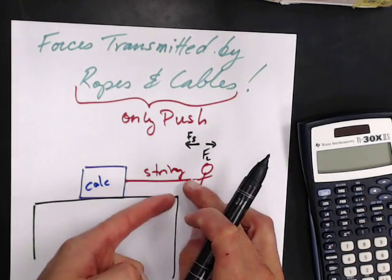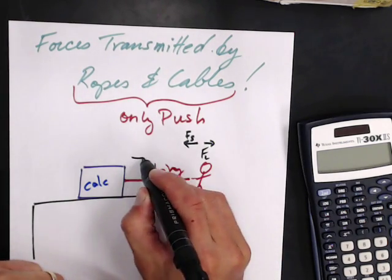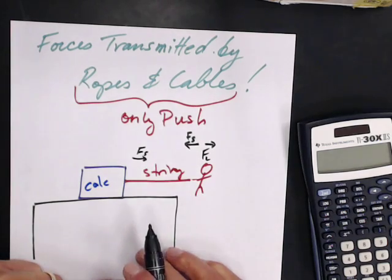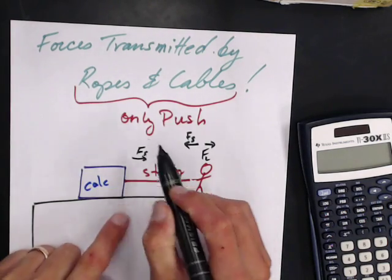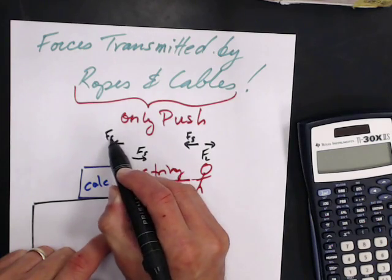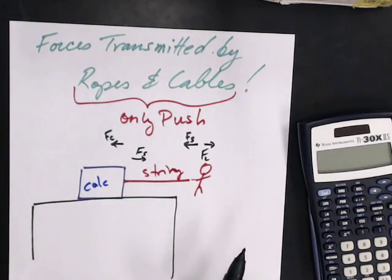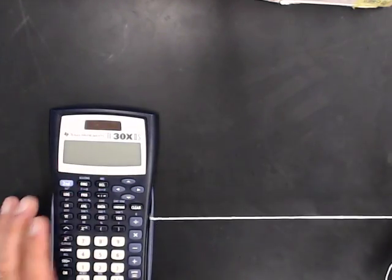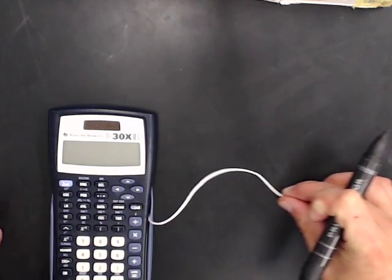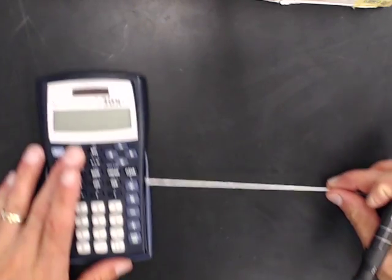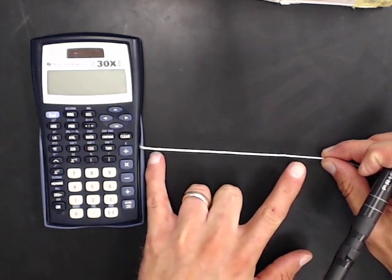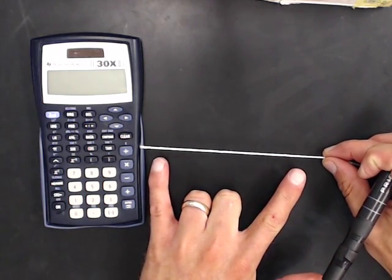But the string is also attached over here, so the force of the string is pulling this way, and then the calculator pulls on the string. The force of the calculator is pulling back. So the string gets stretched out. When I pull on it, it's kind of loose at first, but then you can see the string being stretched out and there's some sort of tension in the string.